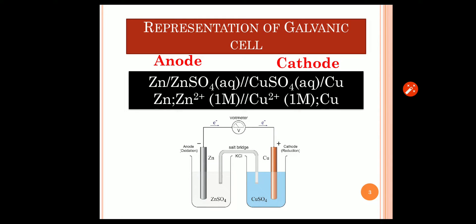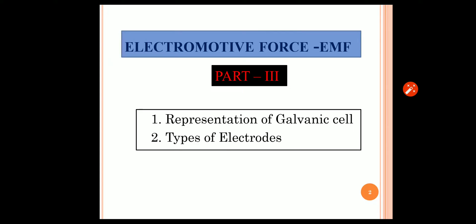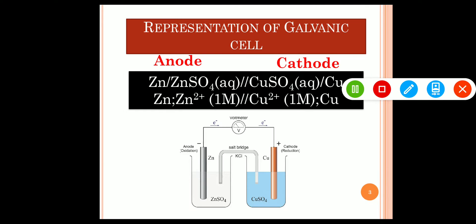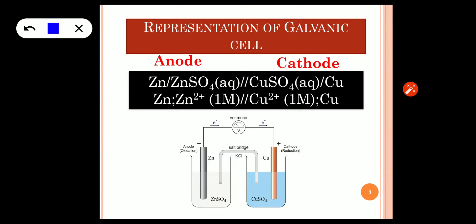Let us understand how to represent a galvanic cell. I have taken the voltaic cell or galvanic cell as an example here. To construct any cell, what we require is two half cells — zinc dipped in ZnSO4 and copper dipped in copper sulfate — and both are connected using the salt bridge. Let us know how to represent this symbolically.